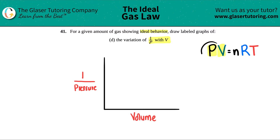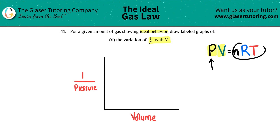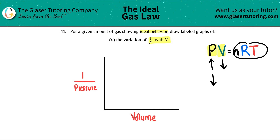Both P and V are on the same side of the equation, so if it has to equal a constant value: if pressure increases, volume has to go down to counteract it; if pressure decreases, volume has to increase. These are indirect relationships.